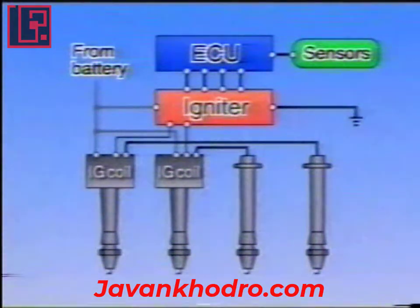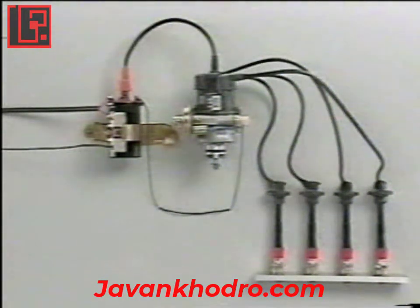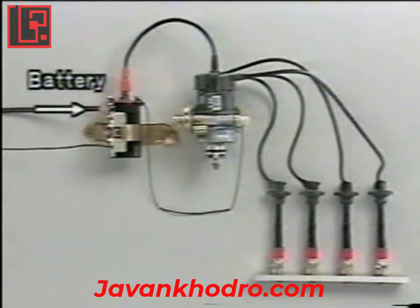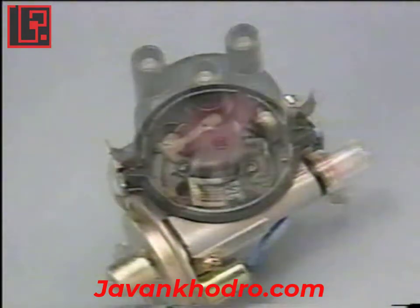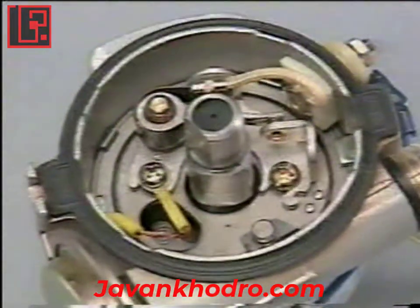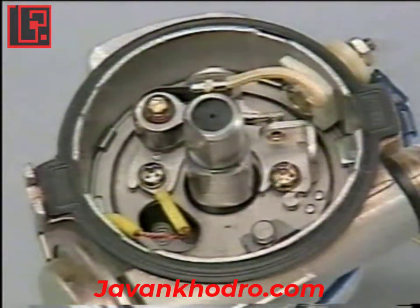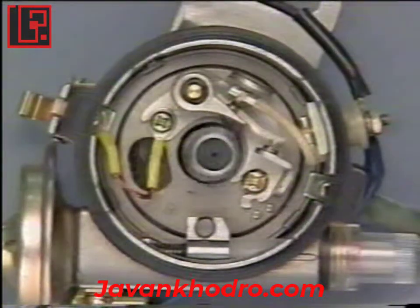Let's have a look at a standard ignition system. Unlike a transistorized ignition system, a standard ignition system turns the primary current of the ignition coil on and off mechanically using the distributor's breaker points. The rotation of the cam on the distributor's shaft opens and closes the breaker points. This turns the primary current of the ignition coil on and off.